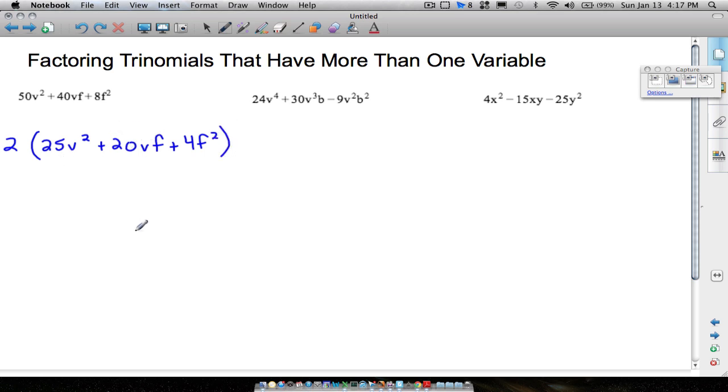Now we can factor this using any of our shortcuts, whether we can recognize that this is a perfect square trinomial. Maybe you see that, maybe you don't. And if you don't see it, let's look at it as an approach, kind of like what we did with bottoms up. Don't worry about all the variables for right now. Let's just suppose the f's weren't there. If we were to factor this and if you did not recognize that this is a perfect square trinomial, don't worry about it. Let's do bottoms up.